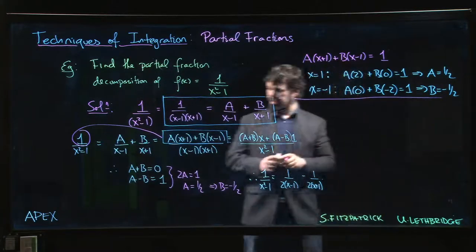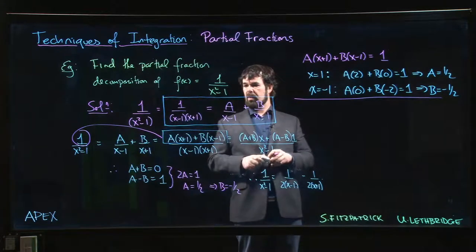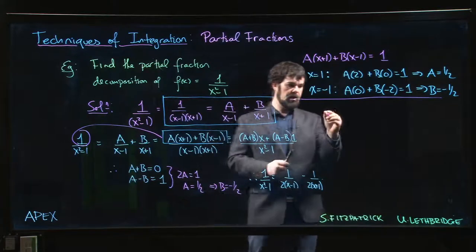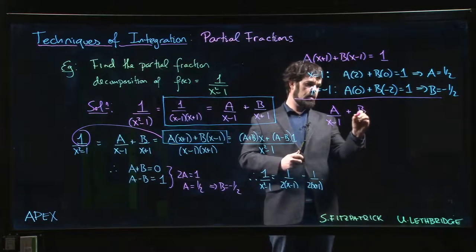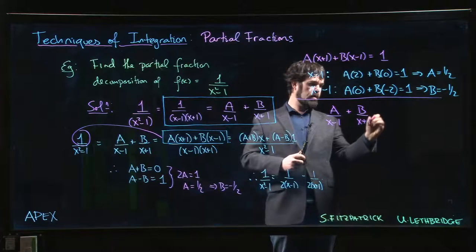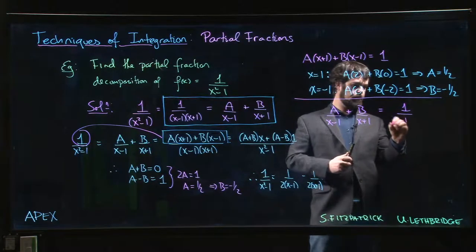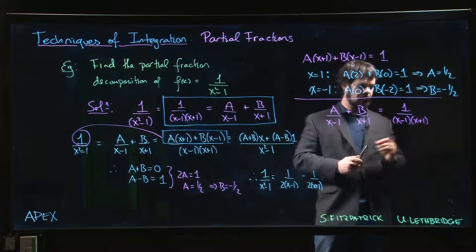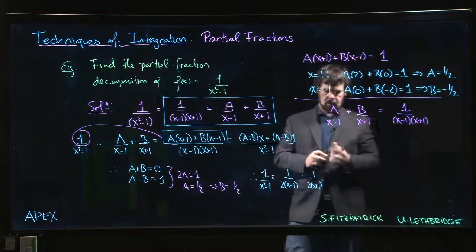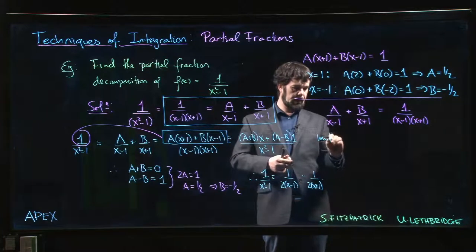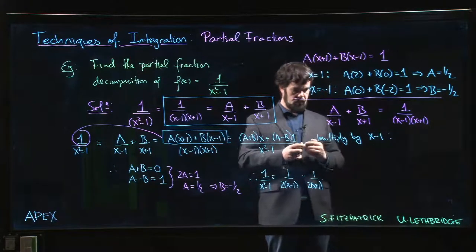Now the other way you can do it—and I hinted at this a couple examples ago—you can actually work with this equation here. So we could say you have A/(x-1) plus B/(x+1) equals 1/[(x-1)(x+1)]. Without even bothering to get a common denominator, what we can do is multiply both sides by x-1.